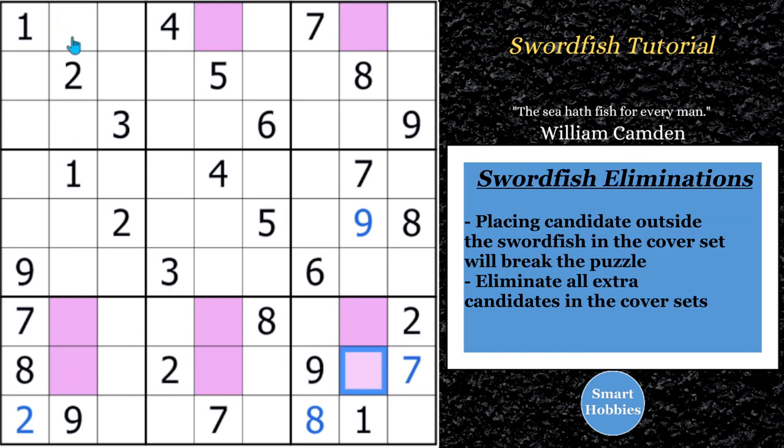So basically, the threes in these columns have to be in these rows. And if they're not in those rows, you try to put a three outside of that row, you're going to break the puzzle. I'll show you how that works.